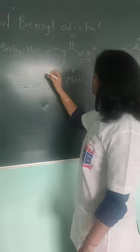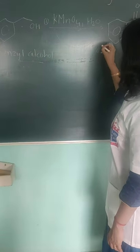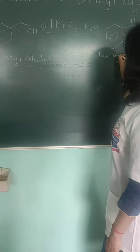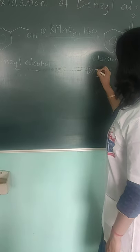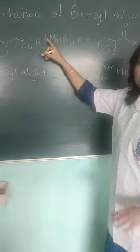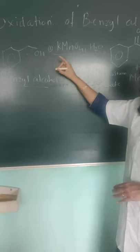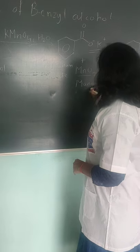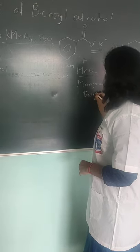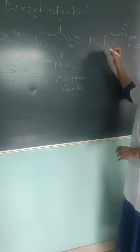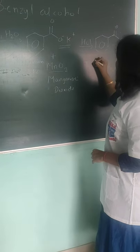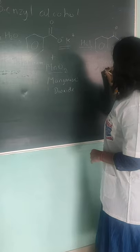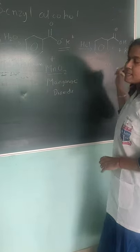This is the salt form, which can be called potassium benzoate. The side product formed is manganese dioxide, since potassium permanganate acts as the oxidizing agent and gets reduced. The final product after treatment with HCl is benzoic acid, along with the formation of potassium chloride as a side product.